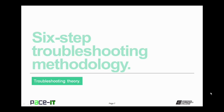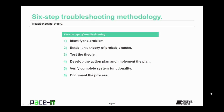Now let's move on to CompTIA's six steps to troubleshooting. The first step is to identify the problem. The second step is to establish a theory of probable causes. The third step is to test the theory of probable cause. The fourth step is to develop an action plan and implement that plan. Step five is to verify complete system functionality. And step six is to document the process. Now let's discuss each of those steps in a little bit more detail.